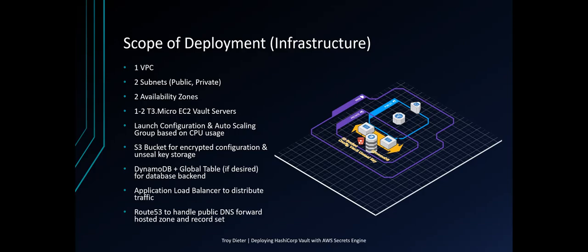Here is the scope of the deployment to the infrastructure, which will include one VPC, which is Virtual Private Cloud; two subnets, public and private; two or more availability zones — in this case, US East 1A and US East 1B; one to two T3 Micro EC2 Vault servers; and a launch configuration based on the configuration pulled from S3, and an auto scaling group based on CPU usage.